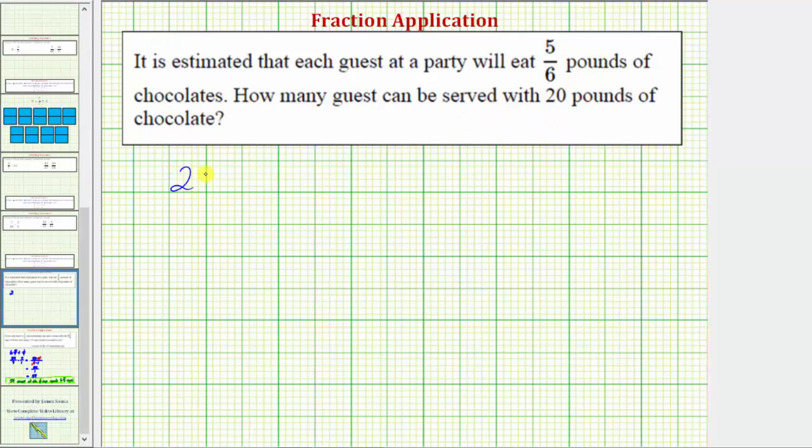We need to determine 20 divided by 5/6. This will tell us how many 5/6 are in 20, and therefore how many guests can be served.